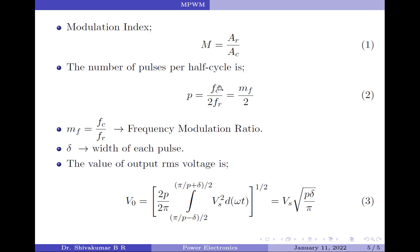The ratio of Fc to Fr is called the frequency modulation index and is denoted by Mf. Therefore, the number of pulses per half cycle can also be represented in terms of the frequency modulation ratio as Mf divided by 2.